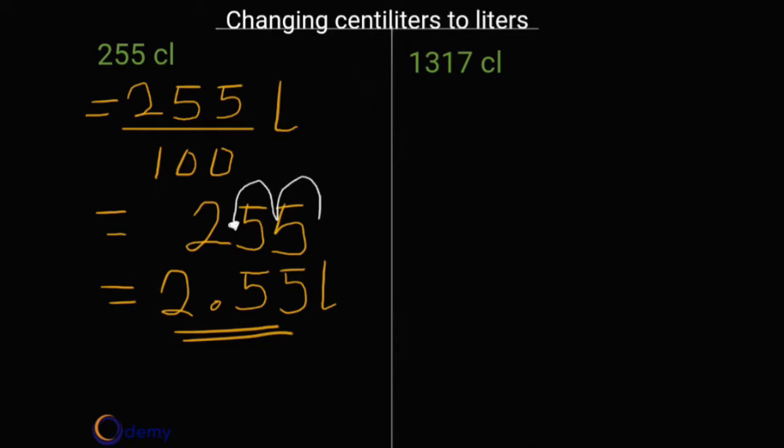So I want you as well to pause the video and try to change 1317 centiliters to liters. What we'll do now is divide this centiliter value by 100. So we have 1317 divided by 100 and we have our liter here. Let me write my number out: 1317.